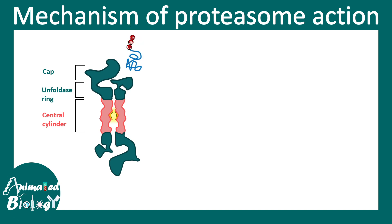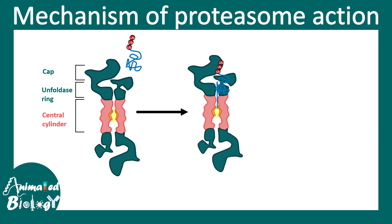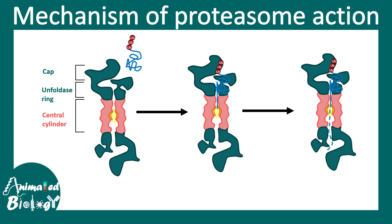A protein is recognized by the cap using the polyubiquitinated residue. Notice how the protein is threaded through the unfolding ring to the catalytic core — the unfolding ring literally rips the protein into its primary structure and passes it through this narrow ring. Eventually the catalytic core starts degrading the protein and chops it into small peptide fragments. This is how the proteasome works.